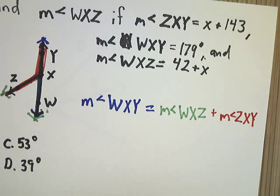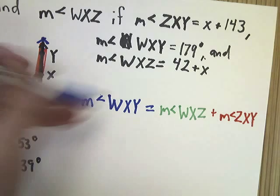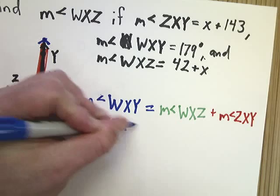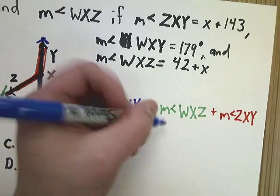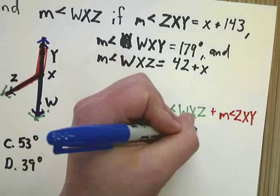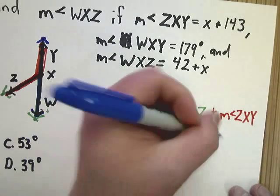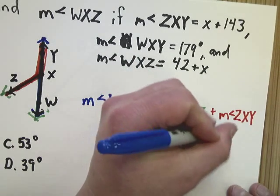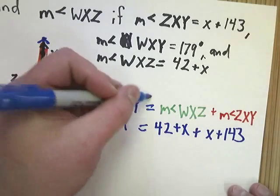So, now that it's set up, it's really simple. You just basically go through and solve. I'm going to substitute the values in. WXY is 179. Measurement of WXZ is 42 plus X. And I'm going to add that to ZXY.